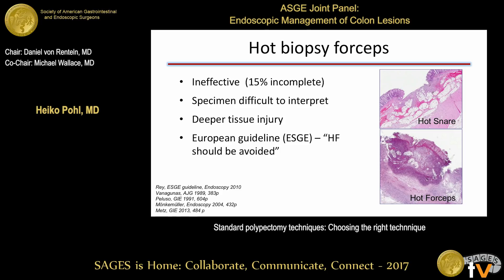Looking at hot biopsy forceps: the idea is to coagulate neoplastic tissue while taking a bite of the polyp. However, this is not effective—15% of polyps removed with hot biopsy forceps are incompletely removed. Hot biopsy also produces specimens that are difficult for pathologists to interpret, and it increases the risk of deep tissue injury, including post-polypectomy burn syndrome or even perforation. The cautery artifact goes deep into the muscularis and possibly into the serosa, unlike hot snare resection where the muscularis propria is unaffected.